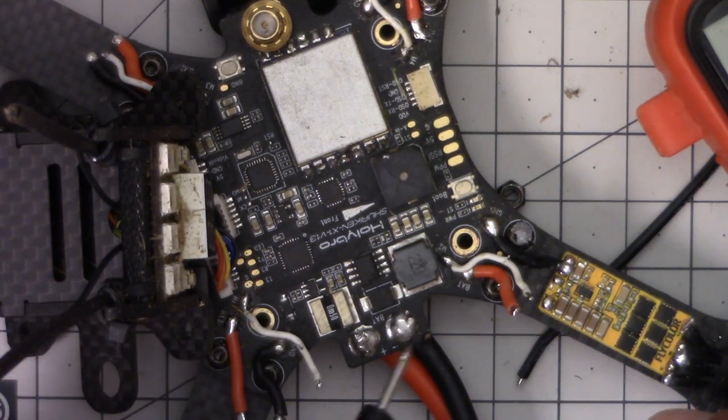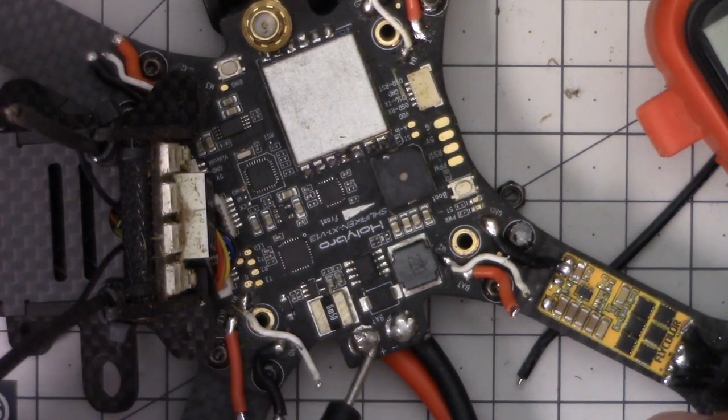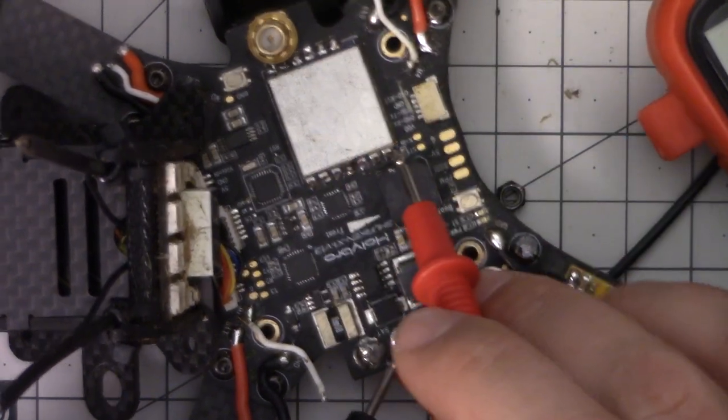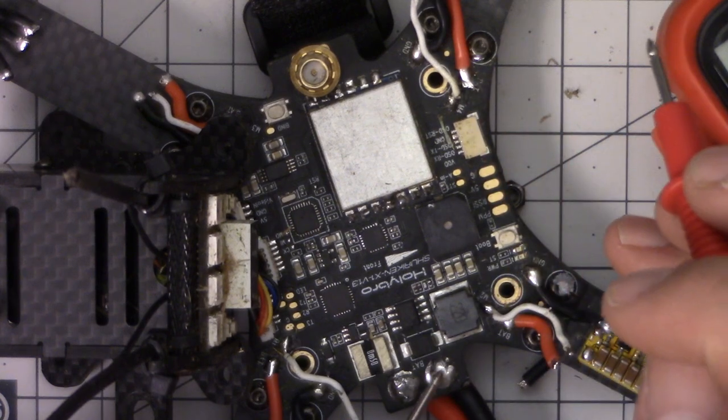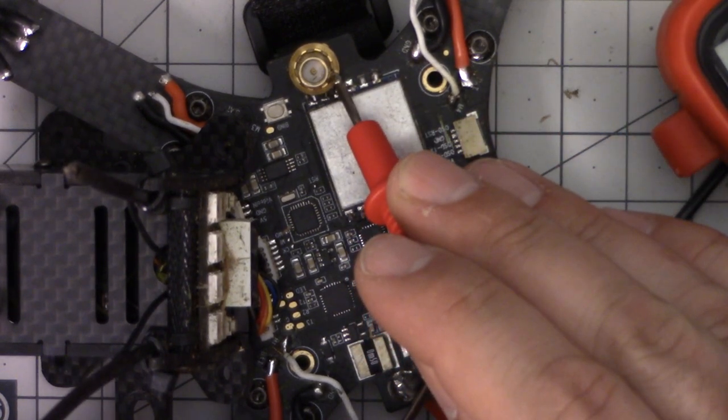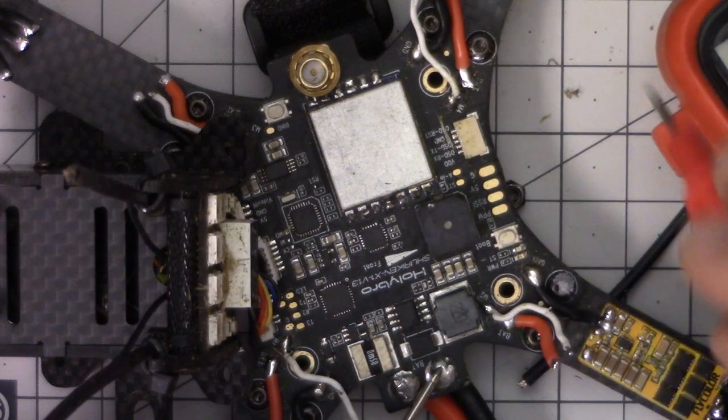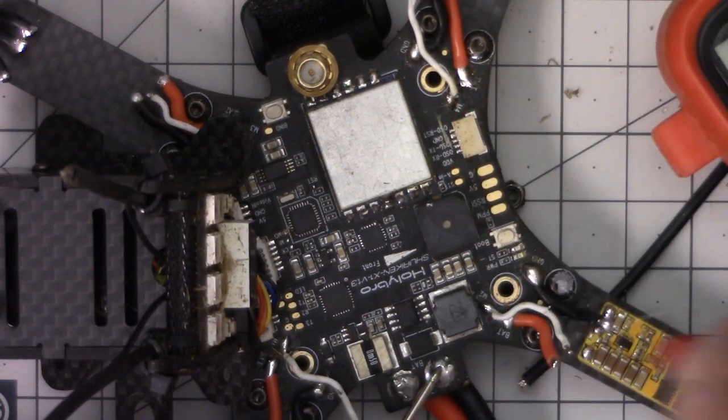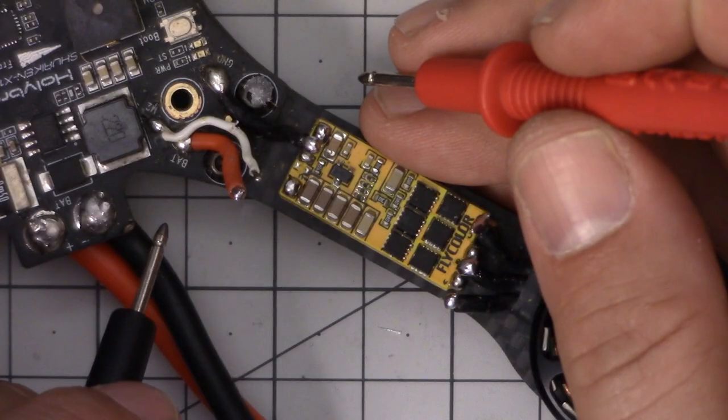And that's true really of anything grounded. So for example, if I touch the SMA connector—I've got again one on the negative—and if I touch the SMA connector, it's usually grounded as well. So the ground, ground is ground pretty much anywhere. I can even touch the screw hole, that's all grounded. Ground is ground pretty much anywhere.